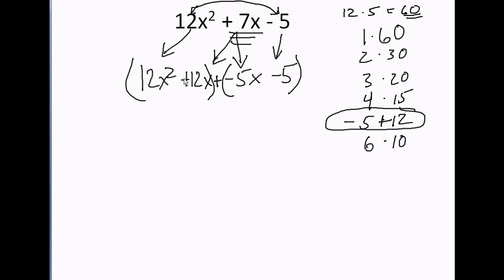Now, what can I factor out of 12x squared plus 12x? I can factor a 12 out of there and an x. The largest number that divides into 12 and 12 is 12. I have an x2 and an x1. An x can be factored out.